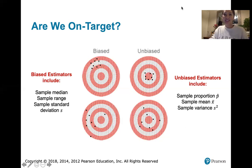That is the end of our discussion of biased and unbiased estimators and sampling distributions. I'll see you in the next video to discuss 6.4, which is about the central limit theorem.